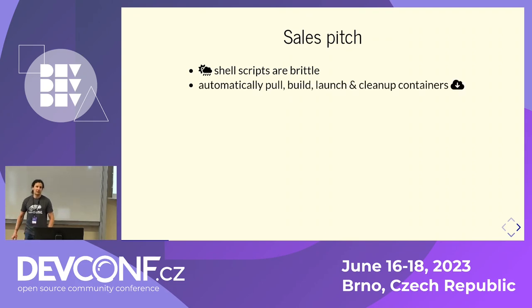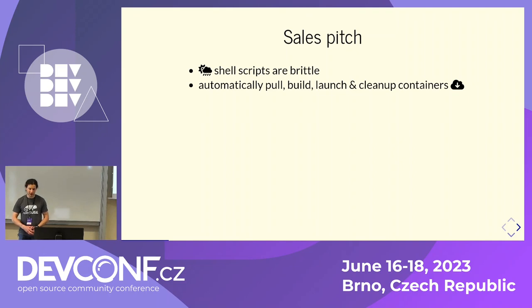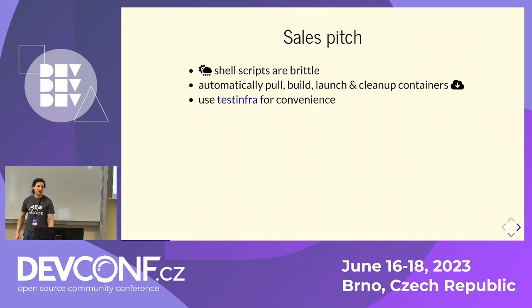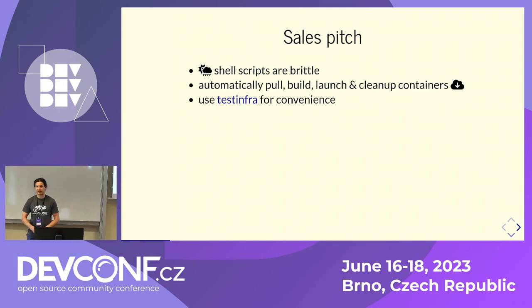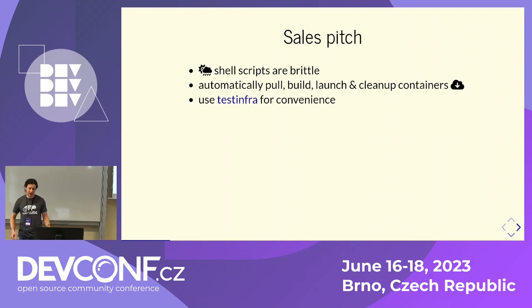So what can this plugin do for you? You can define all your container images. It will do all the pulling, all the building, launching, and cleanup for you — so you don't have to do that. You can use the testinfra module, which gives you a very nice abstraction layer around all the common filesystem operations, checking whether there are packages installed — essentially all the stuff you can also do in a shell, but just in Python.